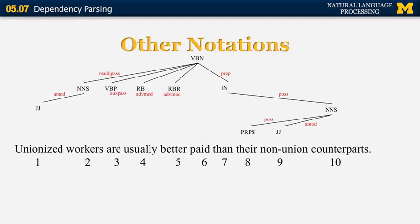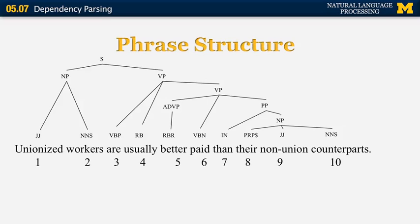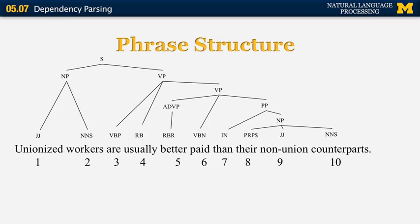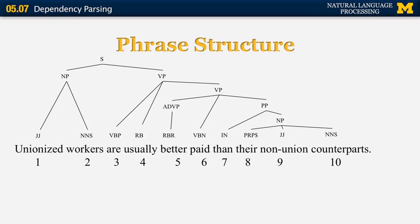There's another notation for dependencies: you can have the verb on top — VBN, 'paid' in this example — with its children labeled with different dependency types such as prepositional phrase, adverbial modifier, non-subject, and so on. There's also a connection between dependency structure and phrase structure. This is the phrase structure where the sentence turns into a noun phrase and a verb phrase. The equivalent dependency structure has the verb at the top. Methods using head rules can convert phrase structure to dependency structure automatically.